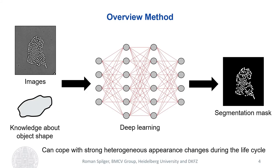In this contribution, we introduce a deep learning method for segmentation of bacteria with strong heterogeneous appearance changes during the life cycle. We investigated different network architectures and introduced a novel shape-based weighting strategy for the loss function to take into account prior knowledge about the object shape.